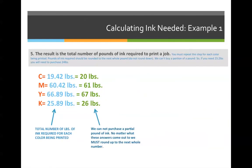Last but not least, we cannot purchase partial pounds. So we need to round all of the answers up to the very next whole number. The correct answer for this problem is 20 pounds of cyan, 61 pounds of magenta, 67 pounds of yellow, and 26 pounds of black.